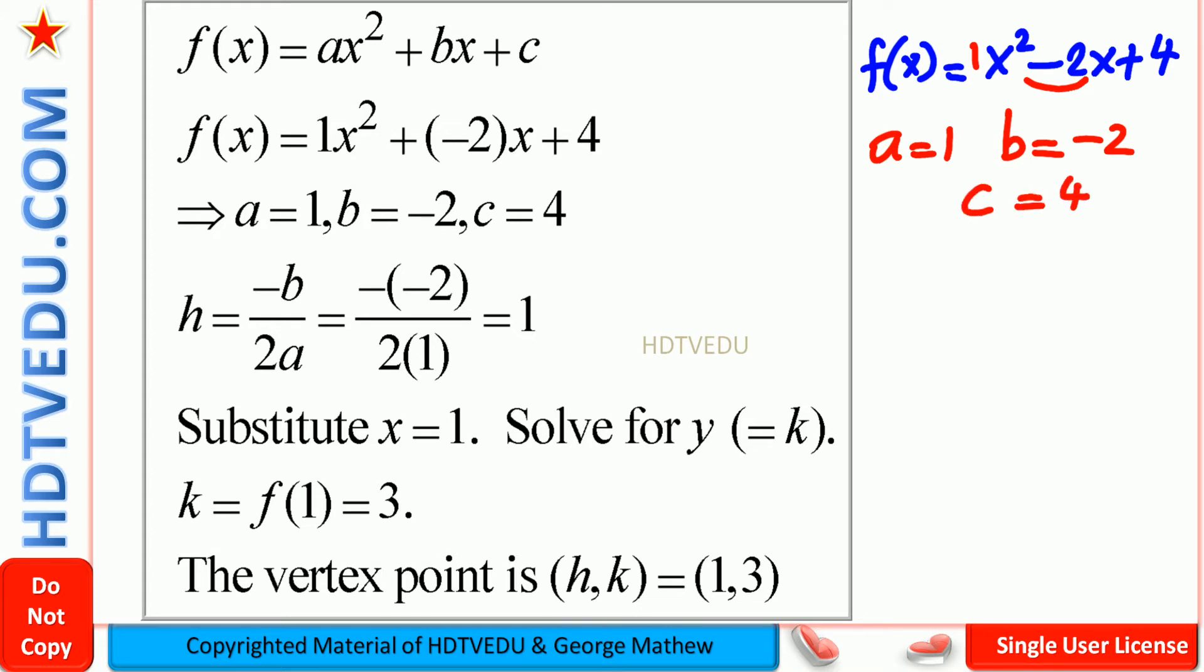So h is equal to negative b over 2a. So we have negative, what is b? b is negative 2, 2 times what is a? 1. So immediately you see, you get negative times negative. Negative times negative is positive. So you get positive 2 over 2 and that is equal to 1.